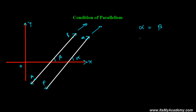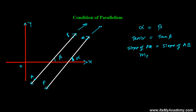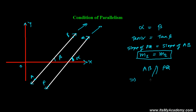For these two lines to be parallel, the angle each makes with the positive x-axis must be equal. Taking tan of both sides: tan(alpha) equals tan(beta). Tan of angle alpha is the slope of line PQ, and tan of angle beta is the slope of line AB. So if the slopes of line PQ and line AB are equal, we can say both lines are parallel. That is the condition of parallelism: AB is parallel to PQ only when their slopes are the same.